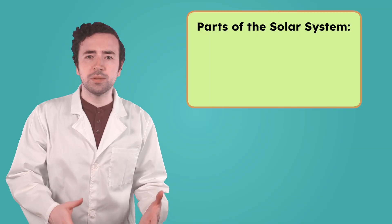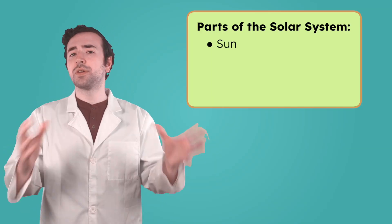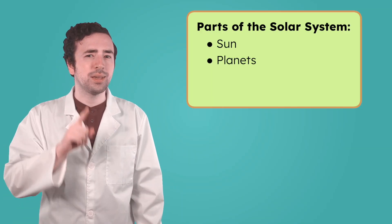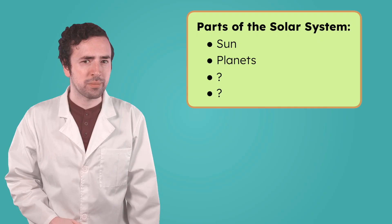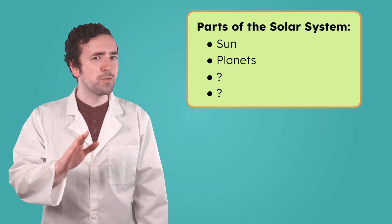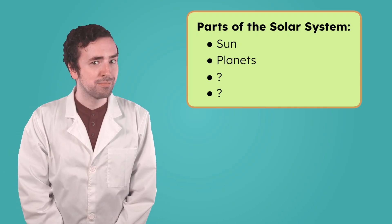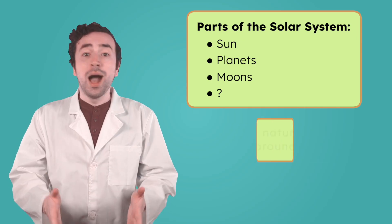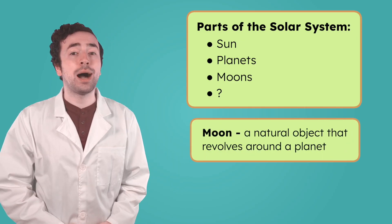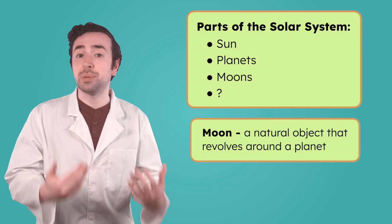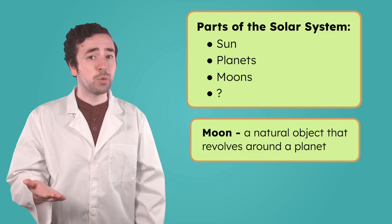Okay, so the solar system includes the sun and everything that orbits around it, like the planets. But what else do you think might be part of it? I'll give you a hint. You've probably spotted one in the night sky. A moon! A moon is a natural object that revolves around a planet. Earth isn't the only planet with one.